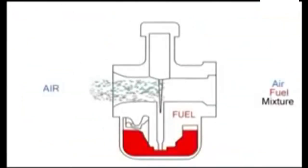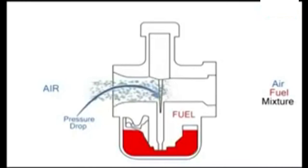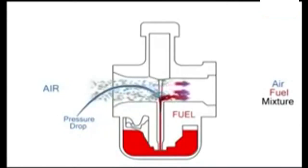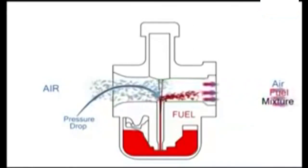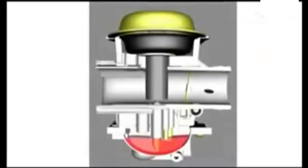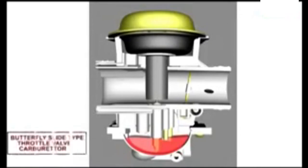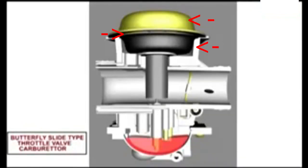For the sake of completeness, here's an animation of a very simple round slide carburetor — it works very much the same. Now let's go over some of the major failure or fault points with the CV style carburetor. Unique to the BS or CV type is the diaphragm and where it seals between the upper chamber and the lower chamber.